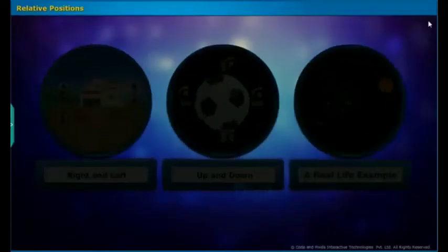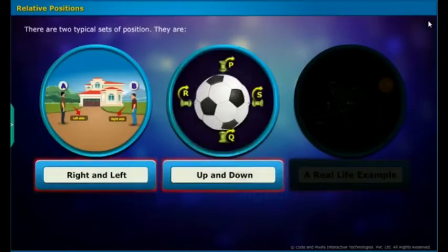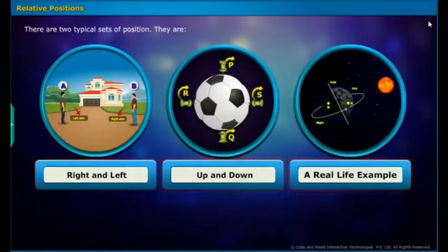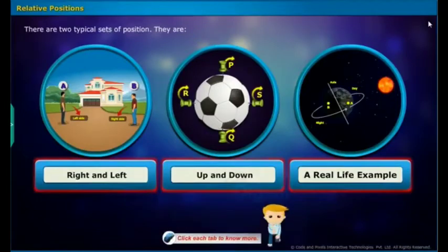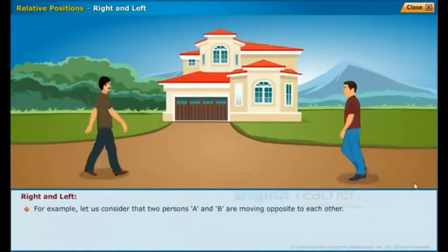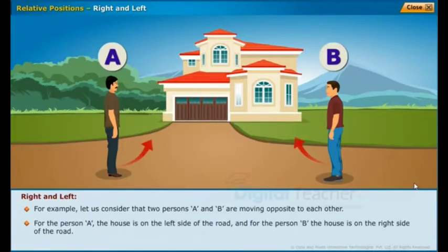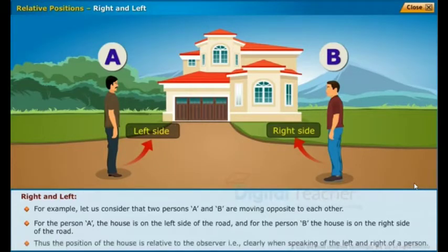Let us now learn about the term 'relative' with respect to positions. There are two typical sets of position: right and left, and up and down. For example, consider two persons A and B moving opposite to each other. For person A, the house is on the left side of the road, and for person B, the house is on the right side of the road. Thus, the position of the house is relative to the observer.